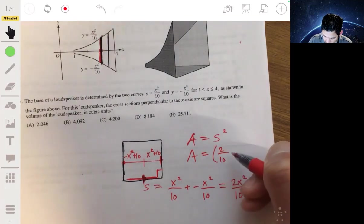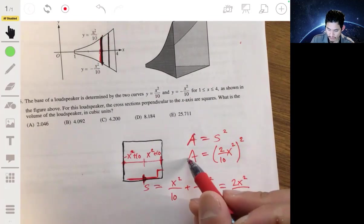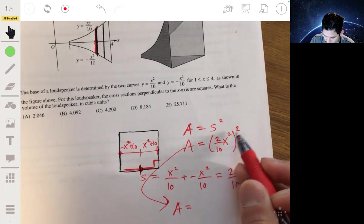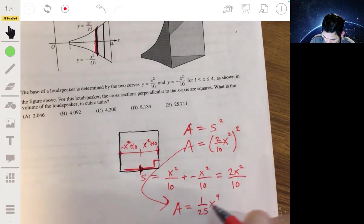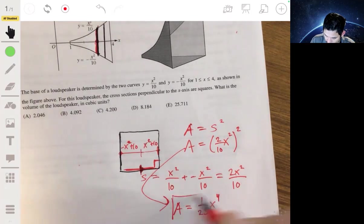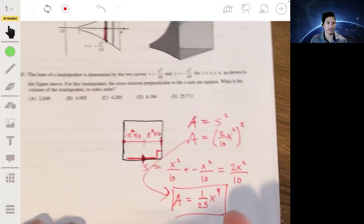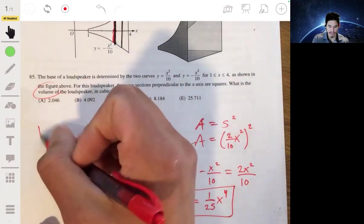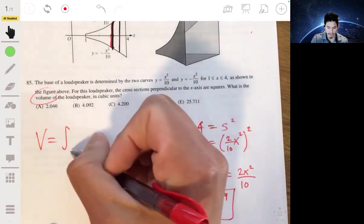So this is your side length, and the area is just this squared: 2 over 10 times x squared squared. It's 1/5th squared, so 1/25th times x to the 4th. That's the area of each cross section. To find the total volume, you integrate this function from 0 to 4.